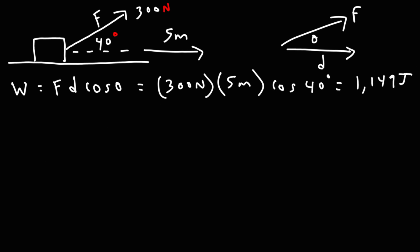You should get 1,149 joules. That's the simplest way to get the answer. If you know the magnitudes of the two vectors and the angle between them, we can calculate the work done by that force using the force and displacement vectors. Now let's calculate that same answer using the dot product formula.